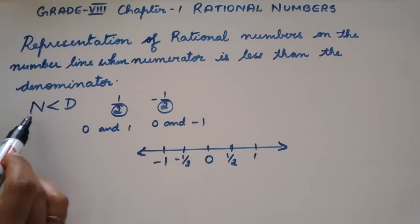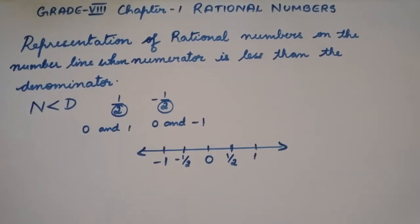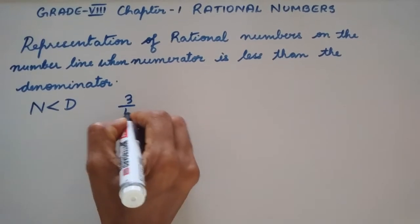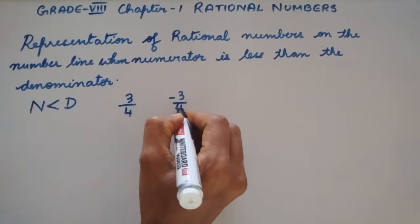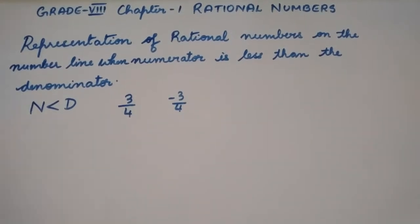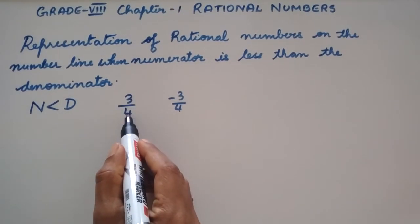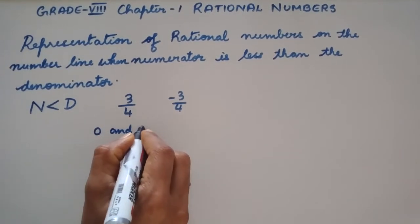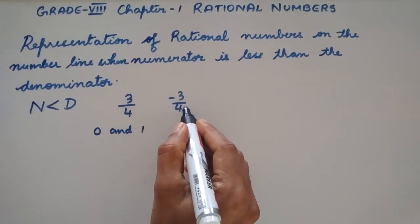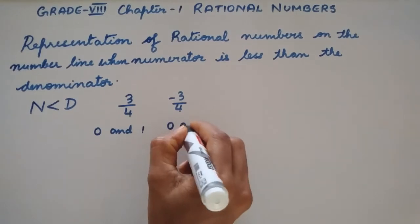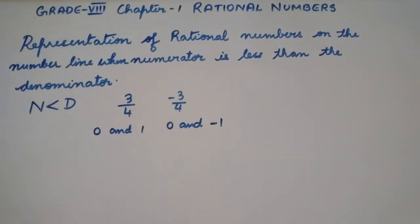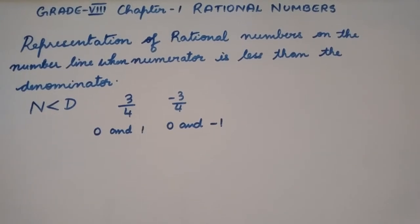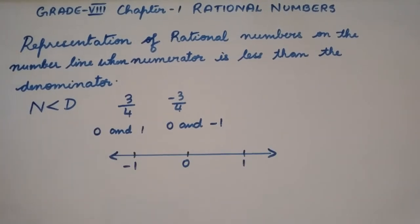This is how we plot 1 by 2 and minus 1 by 2. Let us look at another example where the numerator is less than the denominator. Let us plot 3 by 4 and minus 3 by 4. Since the numerator is less than the denominator, we know that 3 by 4 will be between 0 and 1, and since minus 3 by 4 is a negative rational number, it will be between 0 and minus 1. So let us draw the number line with 0, 1, and minus 1 plotted.